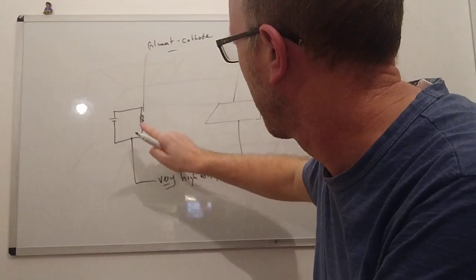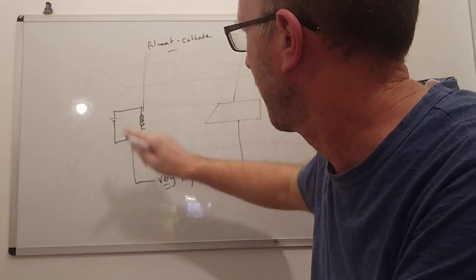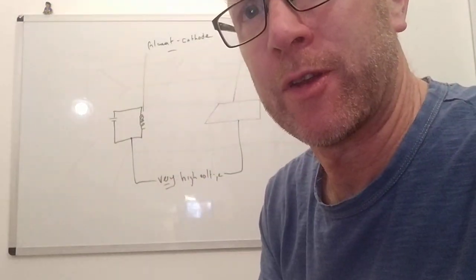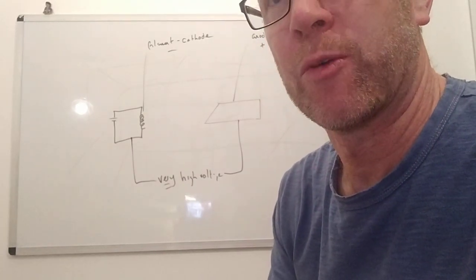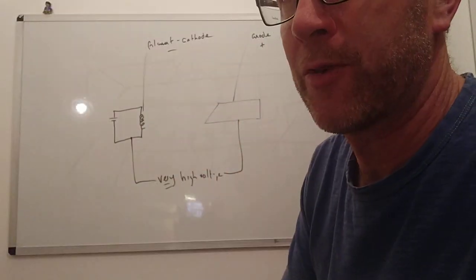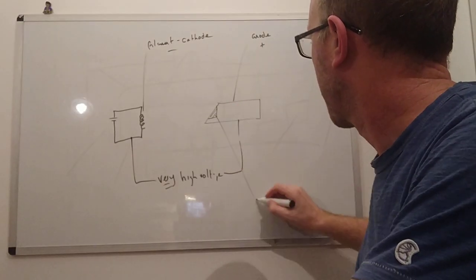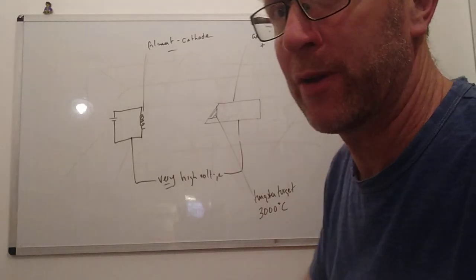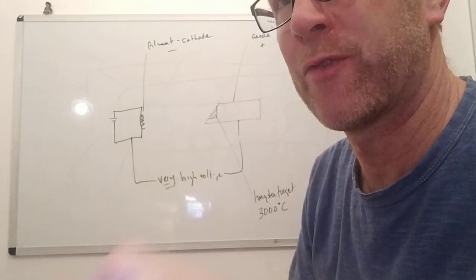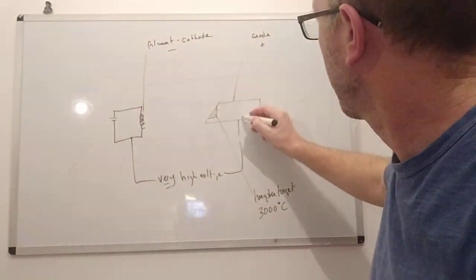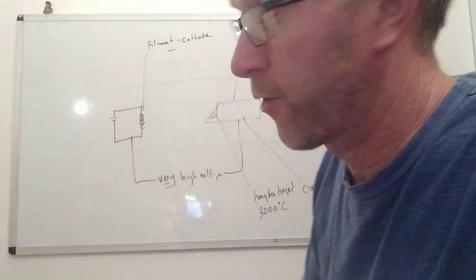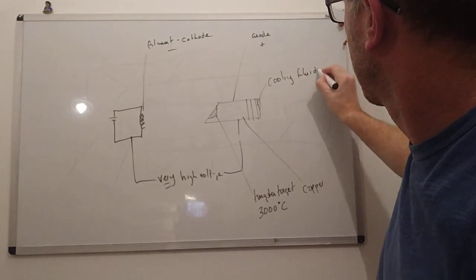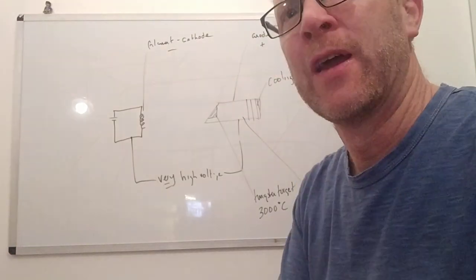Electrons are emitted by thermionic emission, accelerated by the very high voltage, and they run into the anode and stop — so they lose all their kinetic energy. By conservation of energy, the kinetic energy has to be transferred into other forms. The first form is heat — mainly heat, more than 99%. To deal with the heat, we make the target out of tungsten, which has a very high melting point of about 3,000 degrees Celsius, so it doesn't melt easily.